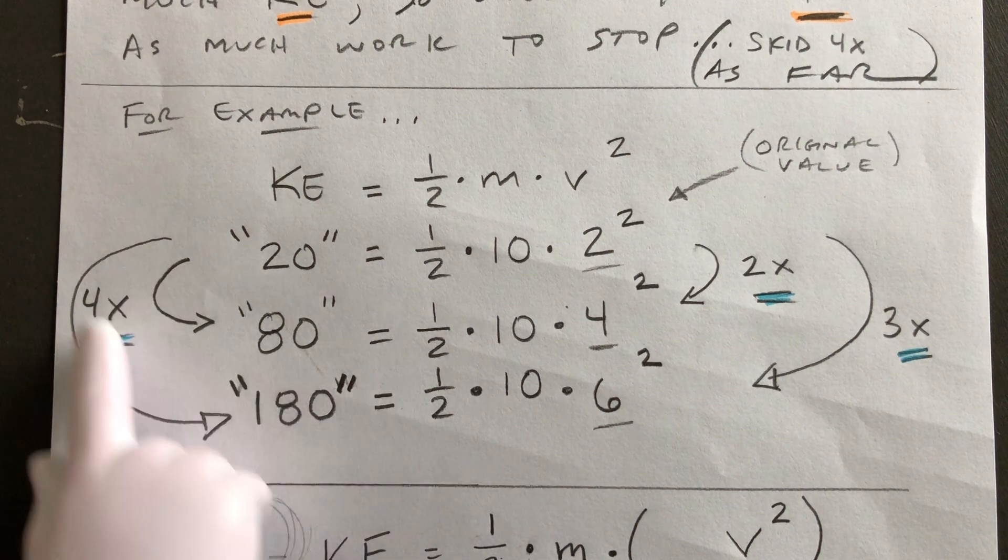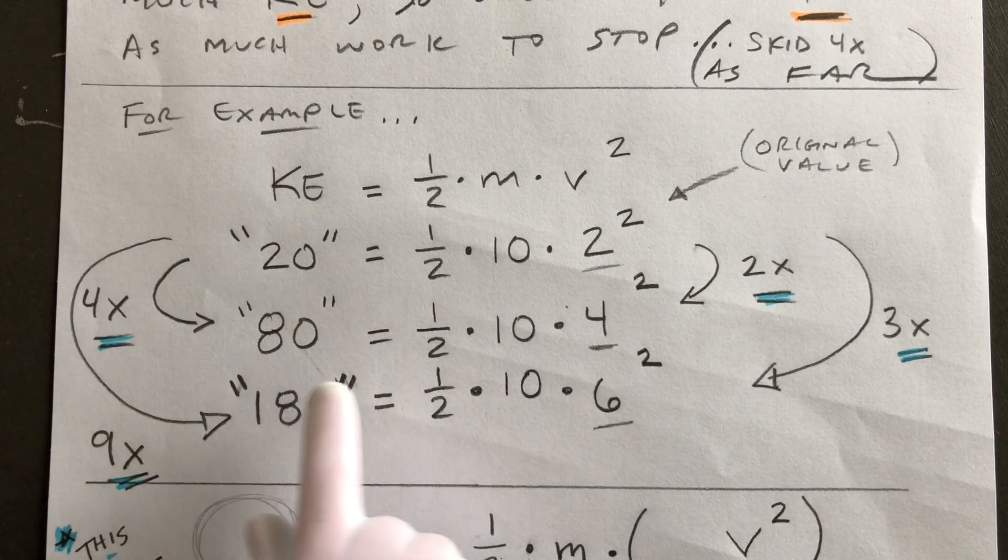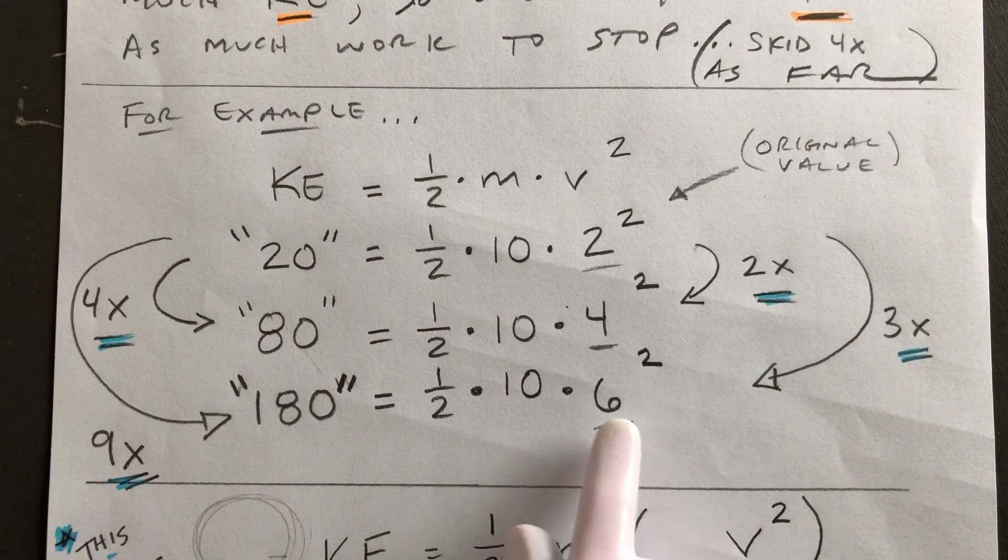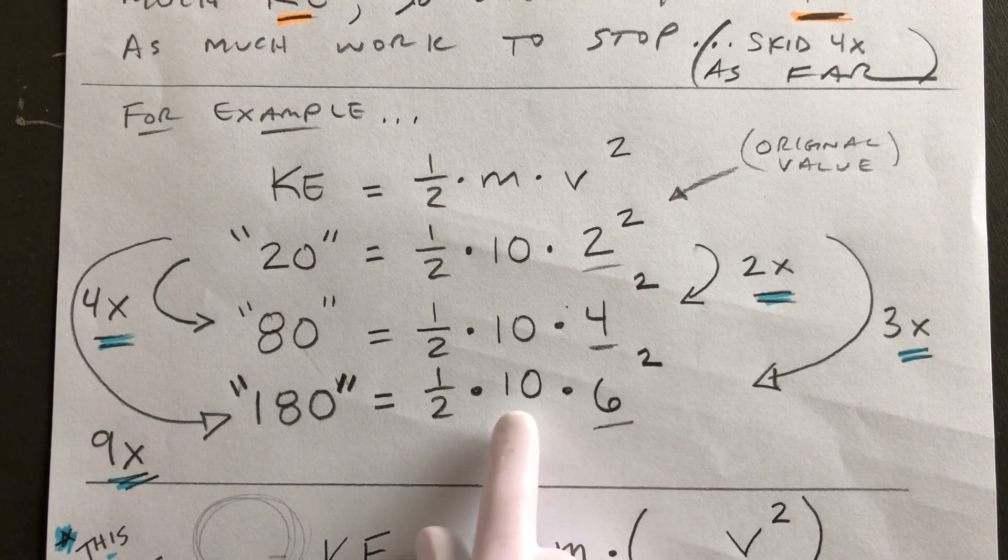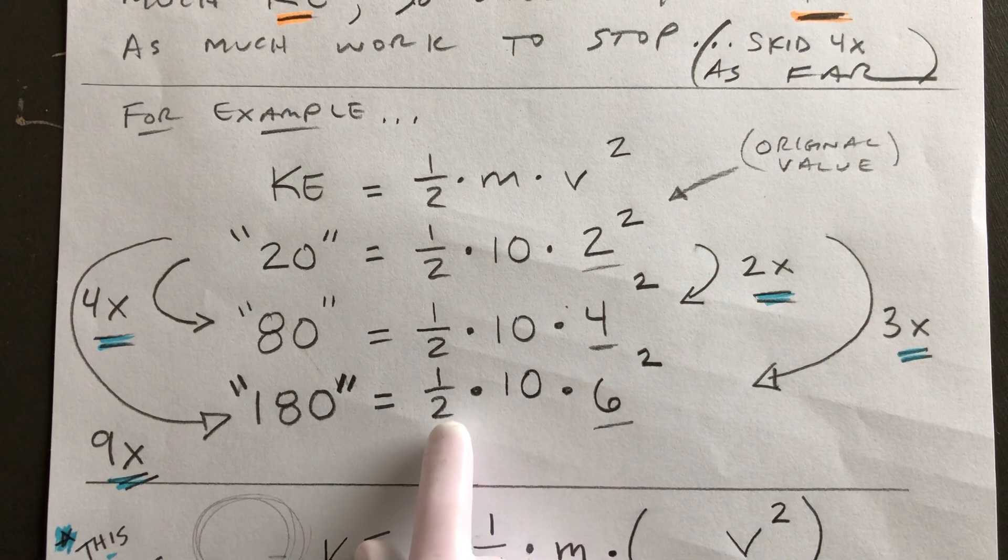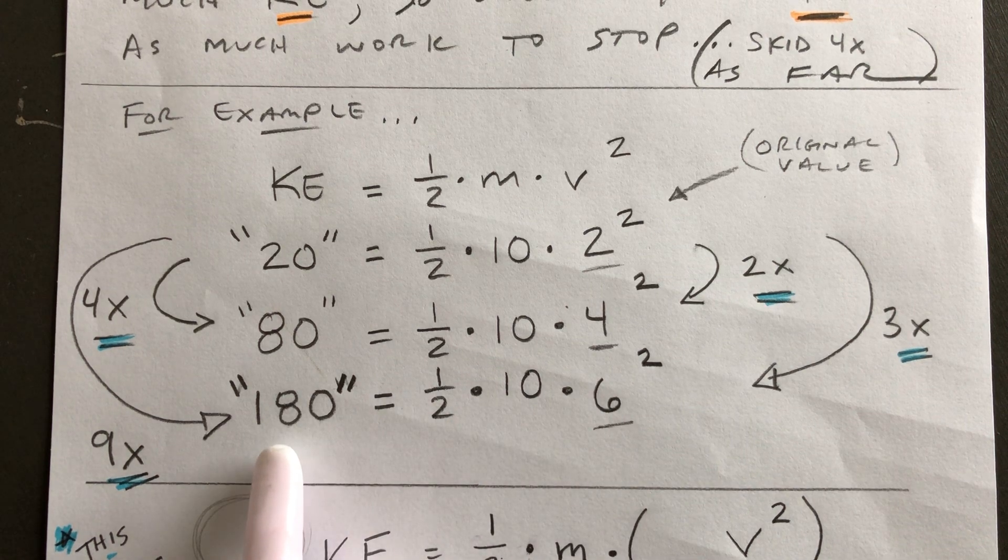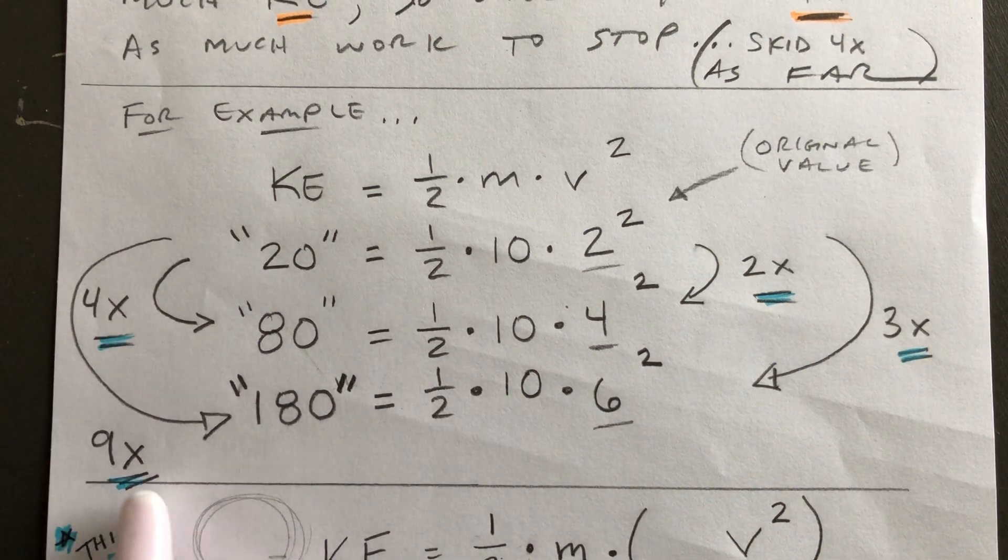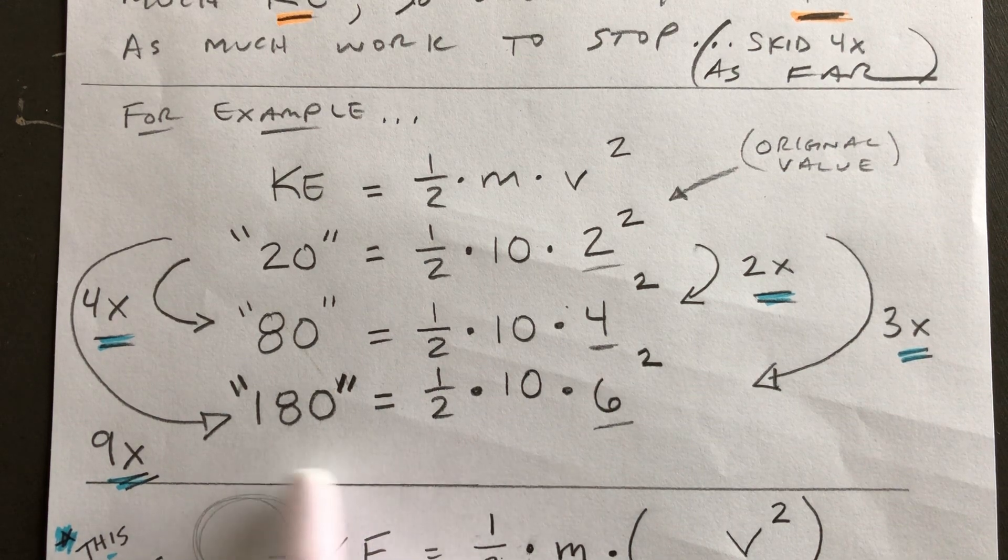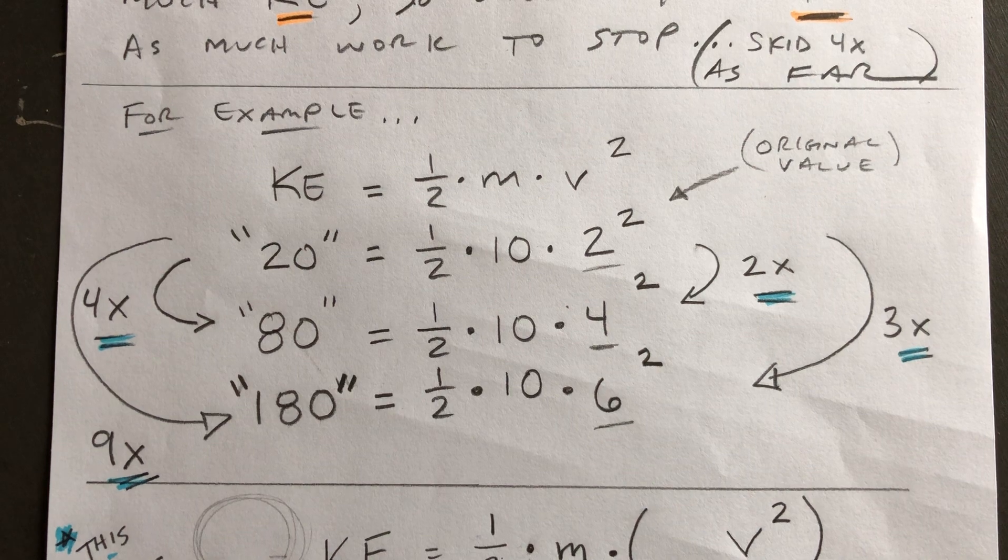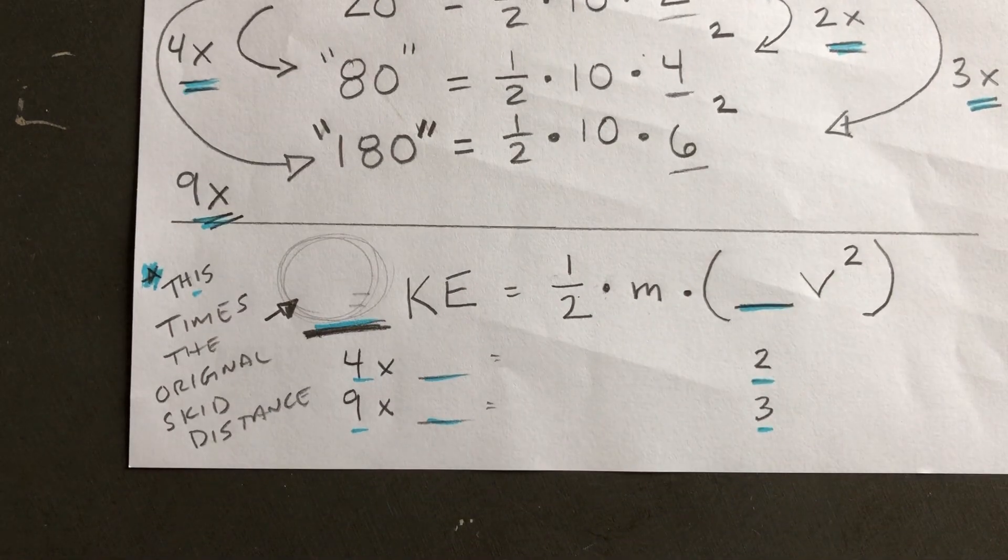What happens if it's three times as much? Six, six times six, 36, times 10, 360, take half, 180. That's actually nine times the amount of kinetic energy. That'd be nine times the skidding distance. I always tell students this is the easiest way to look at it.